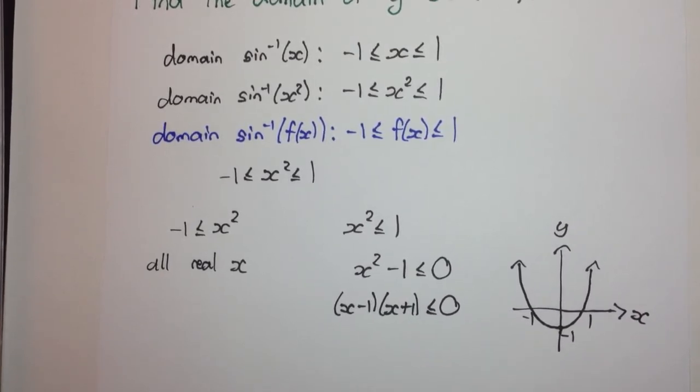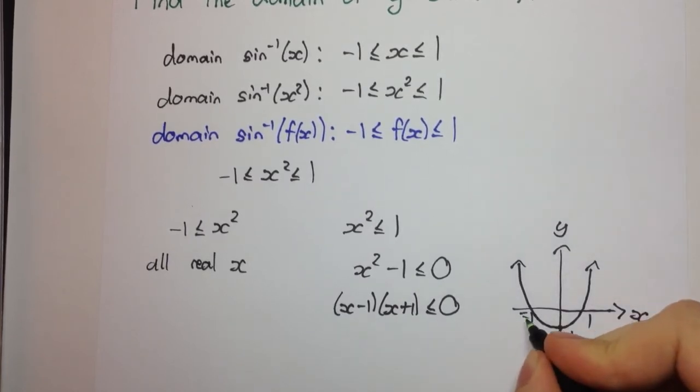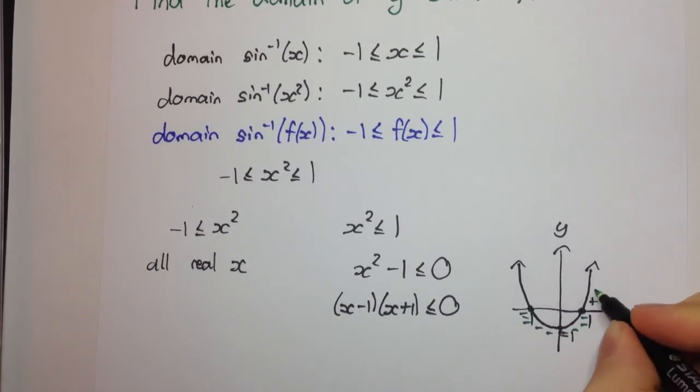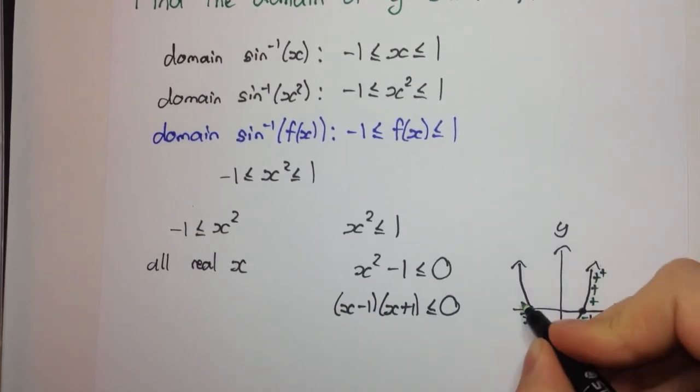And the places where it's less than or equal to 0 are here. So all here, it's less than 0. It's equal to 0 at 1 and minus 1. And above, it's going to be positive.